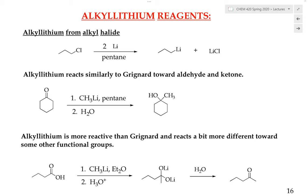In this lecture video I will be discussing the alkyl lithium reagent, which is a type of organometallic reagent. We will be discussing the differences and similarities between the alkyl lithium reagent versus the Grignard reagent, and how they react with some functional groups in the synthesis of alcohols.